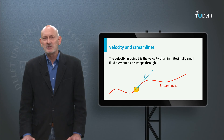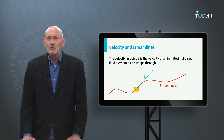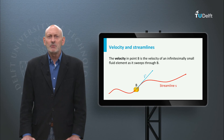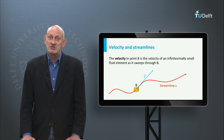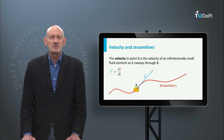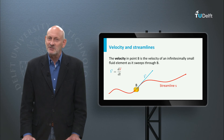The path that particles of a fluid follow is called a streamline. Here we see a very small particle B moving along such a streamline. The velocity of this particle in any point of the streamline is pointing in the direction of the tangent at that point.